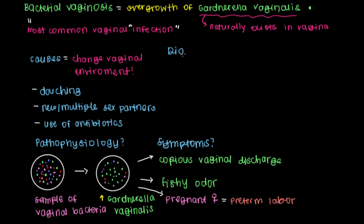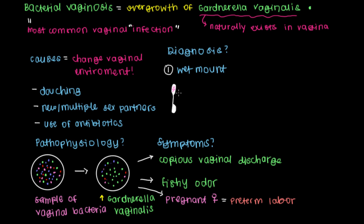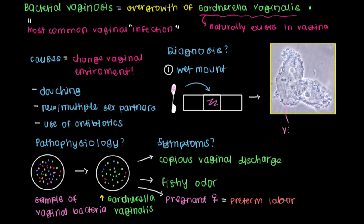It's important to talk about how we can diagnose bacterial vaginosis. This is mainly done by using what's called a wet mount, where you take a swab or sample from the vagina and add it onto a microscopic slide. When you look at this under a microscope, you'll see vaginal epithelial cells littered all over with bacterial organisms — there are just so many of them outlining the cells. These are referred to as clue cells, and finding them under a wet mount indicates that your patient has bacterial vaginosis.